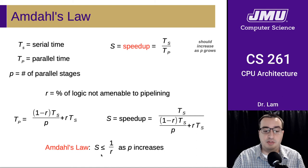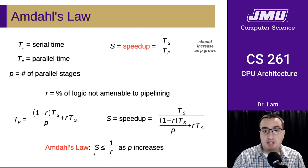And this is Amdahl's law, essentially, which is that S is less than 1 over R as P increases. So as we increase the amount of parallelism in the system, the speedup is going to be limited inversely with the amount of the logic that's not amenable to pipelining.